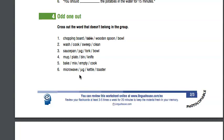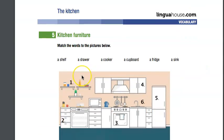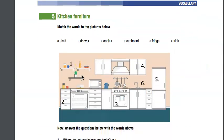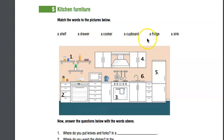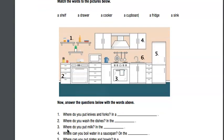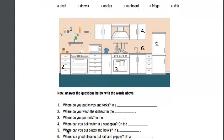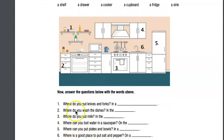Moving down, we've got some kitchen furniture - things that are in the kitchen. Match the words to the pictures. We've got a shelf, a drawer, a cooker, a cupboard, a fridge, and a sink. Here we've got a list of questions to go with those.